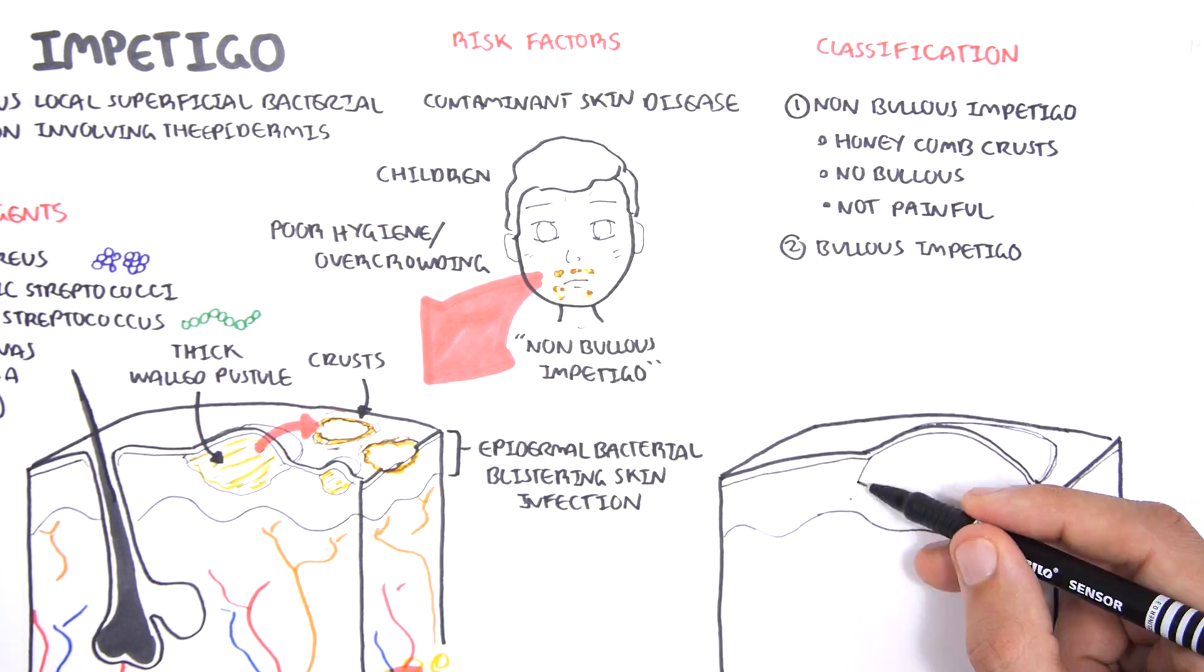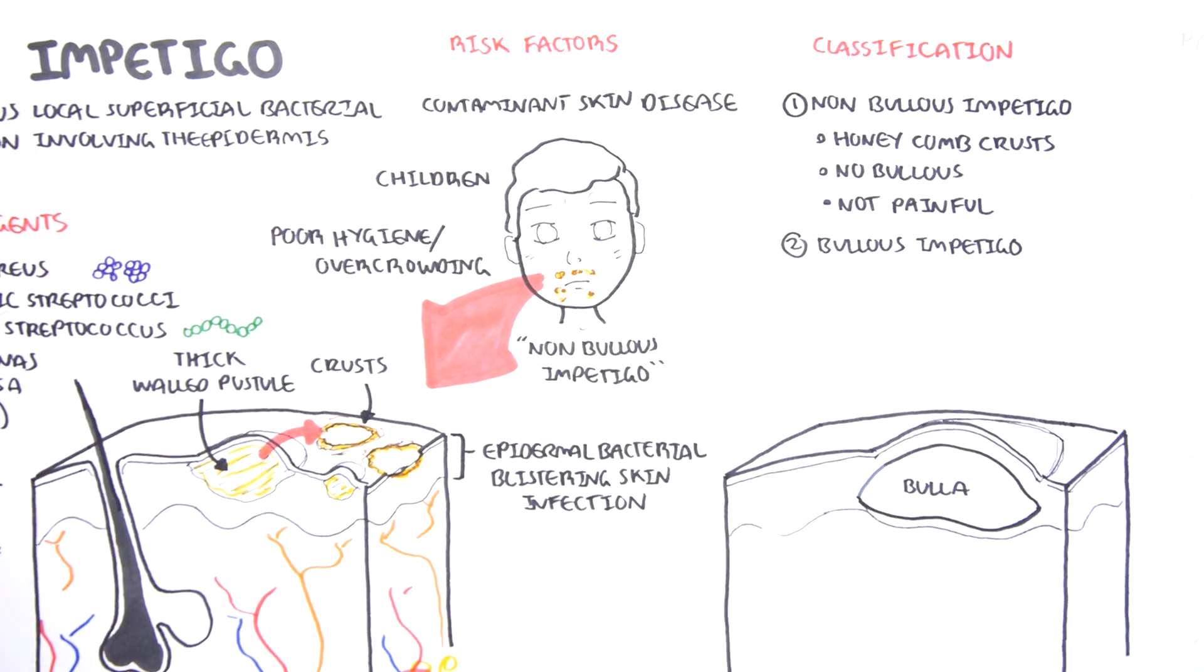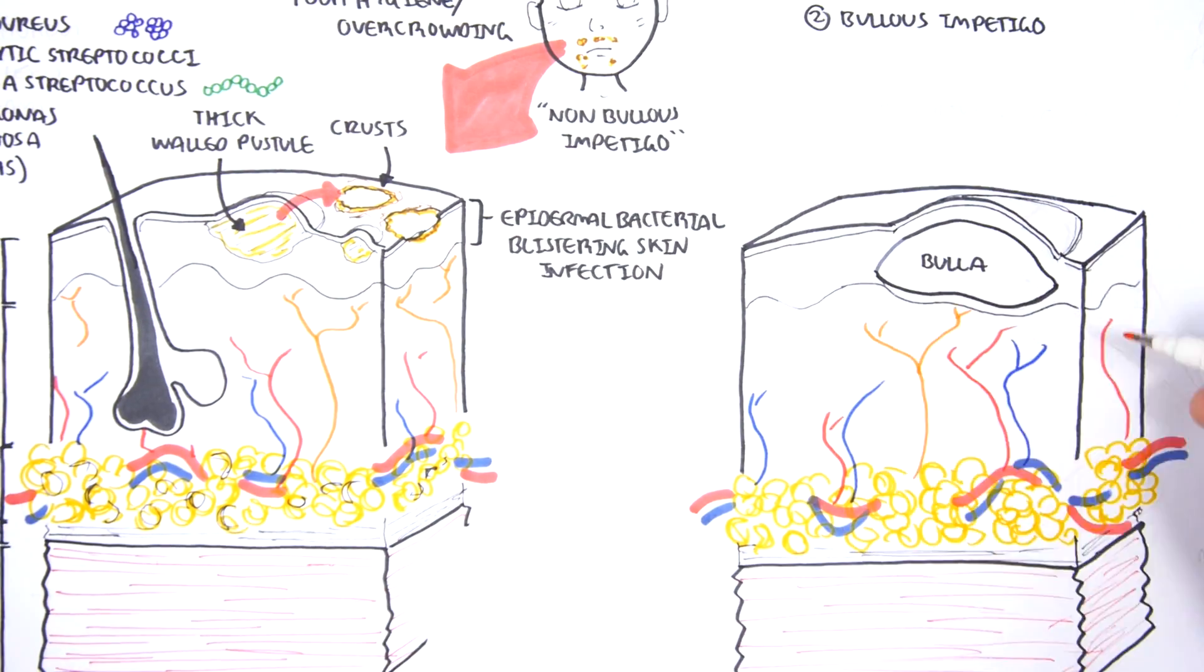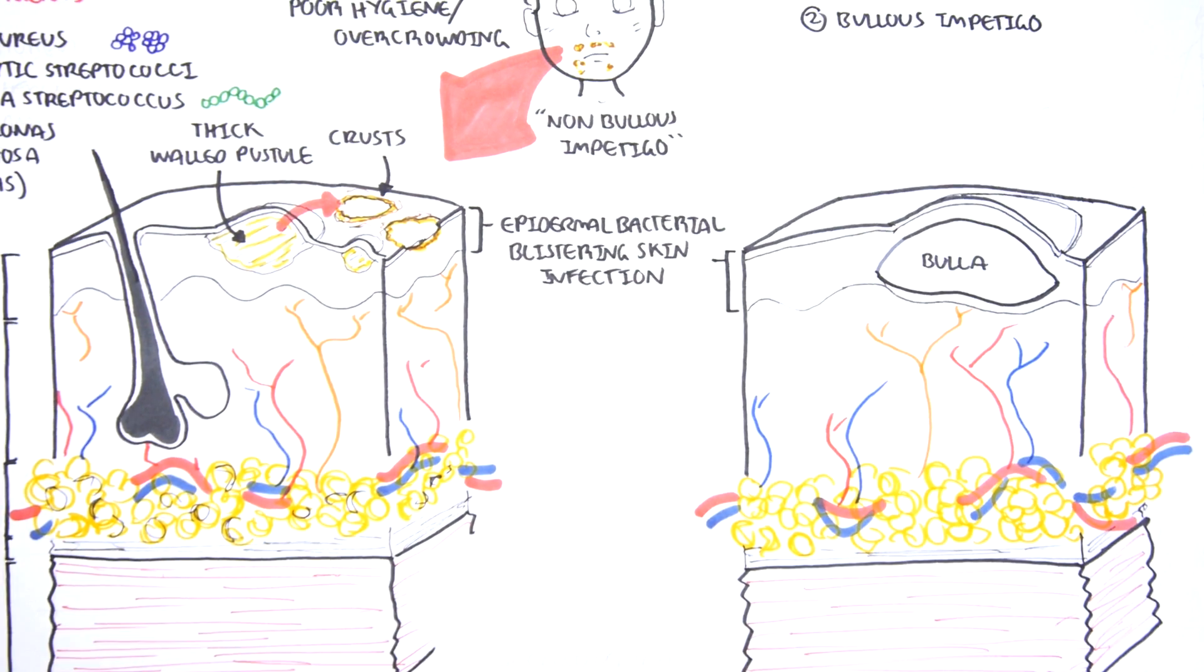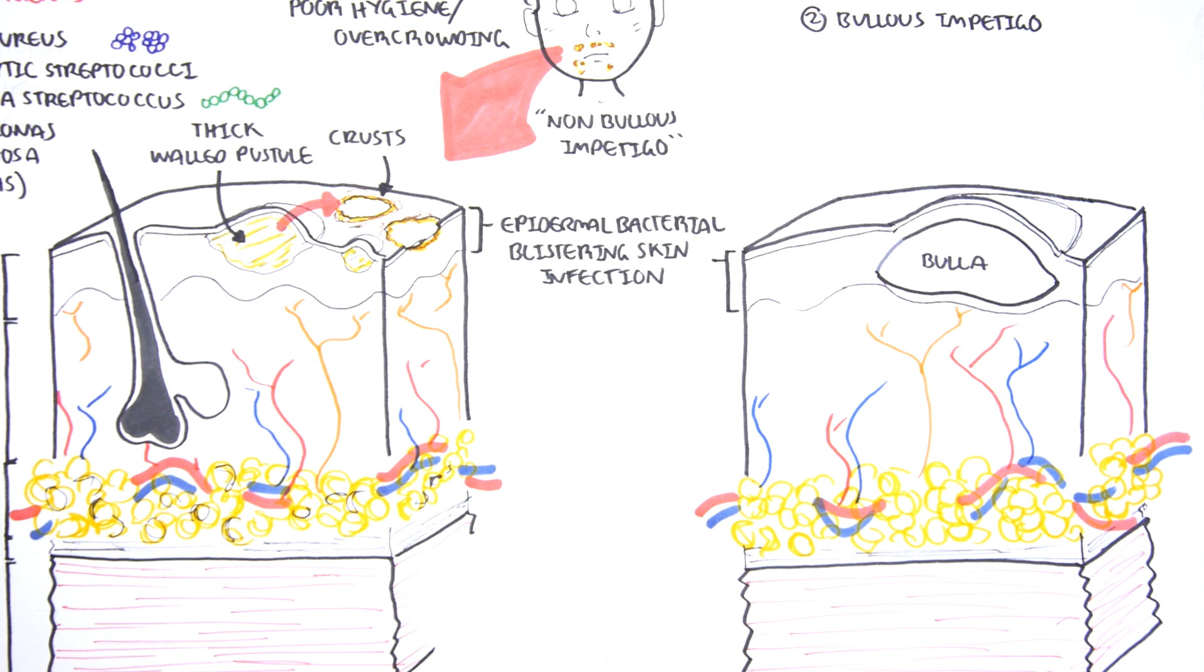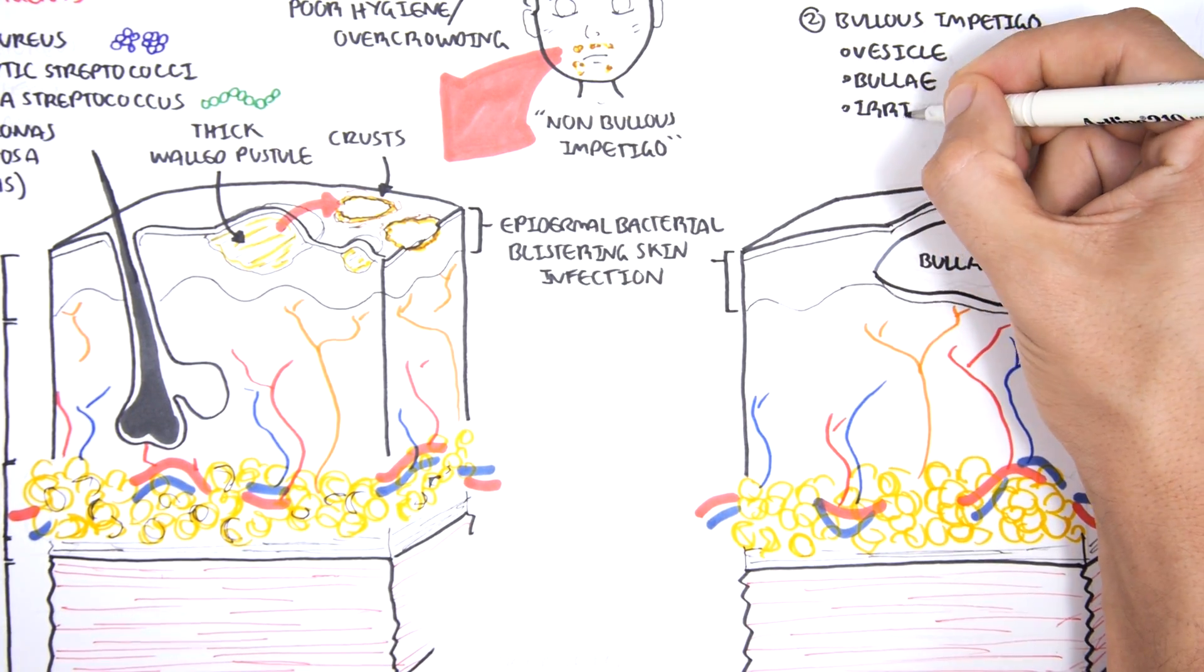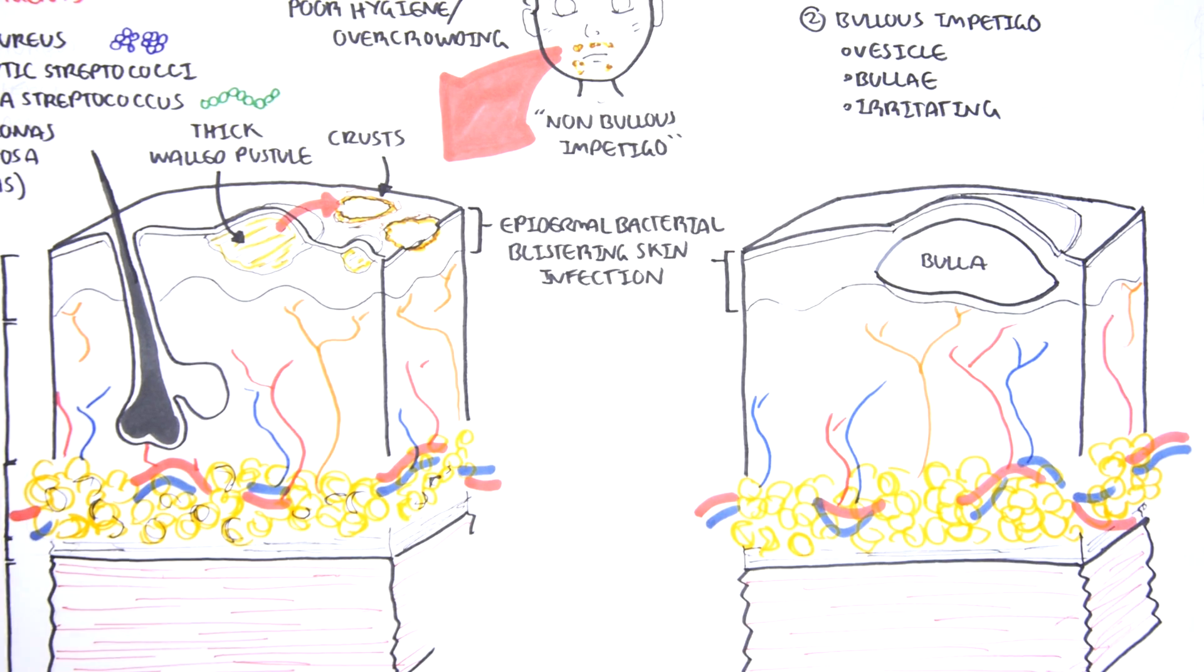Bullous impetigo, on the other hand, is different. If we're to draw it out, bullous impetigo involves formation of a bulla, which is essentially a big blister. This is only confined to the epidermis. Because it is so big, the blister can actually cause irritation because it's very close to the sensory nerve fibers. Bullous impetigo is characterized by vesicles, the small blisters, bulla, the big blisters, and it being irritating.